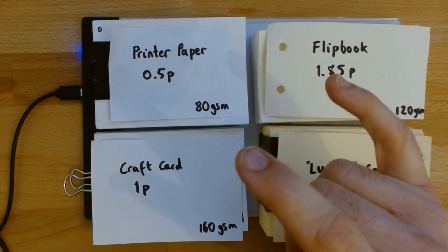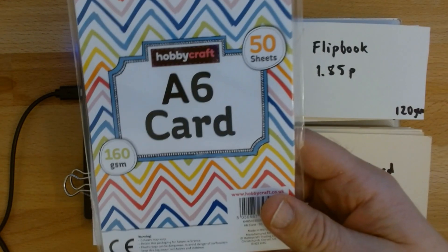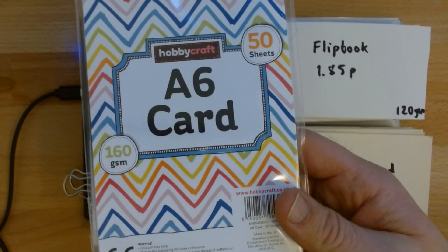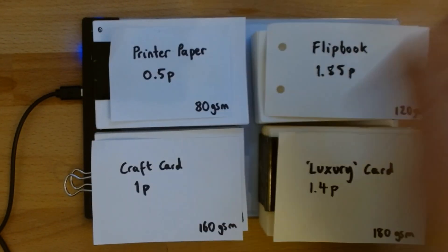If you can stretch to it, then I would try and get your hands on some A6 card like this. In the UK, I get this from Hobbycraft, you get 50 sheets for a pound, so that makes 100 pages at 1p each.